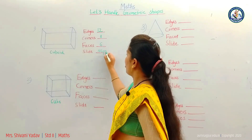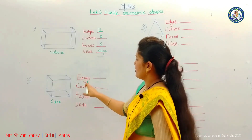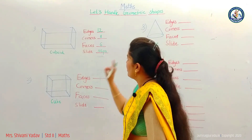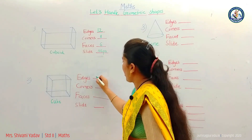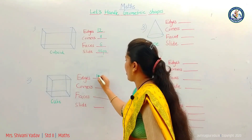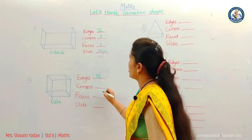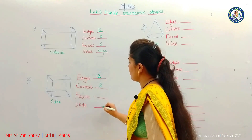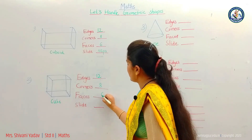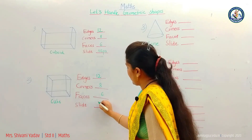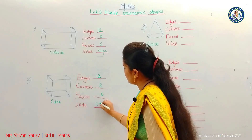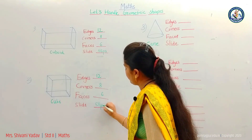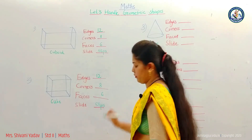So, a cuboid has twelve edges, eight corners, six faces, and it slips. Second one is cube — same as cuboid. It also has twelve edges, eight corners, six faces, and it also slips. It does not roll.